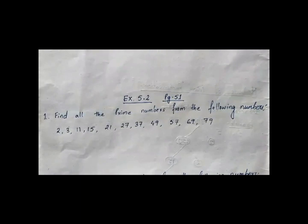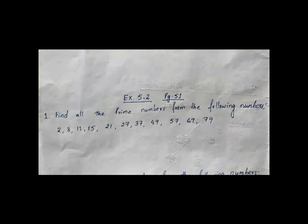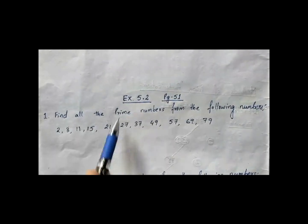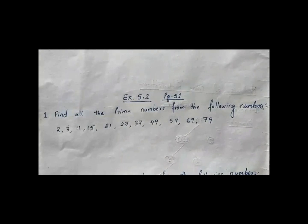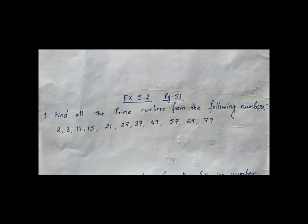So students, now that you have learned what are prime numbers, composite numbers, co-prime numbers, and how to do prime factorization, let us try to solve exercise 5.2. Turn to page 51 and see the first question: find all the prime numbers from the following numbers. Prime numbers are those which have only 2 factors, so you can choose among these numbers and solve it yourself.